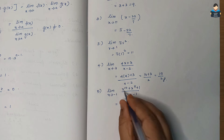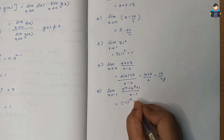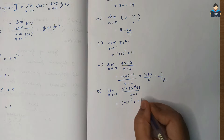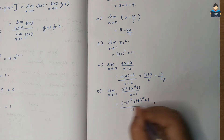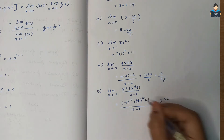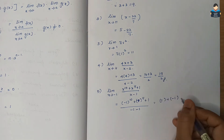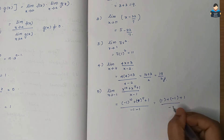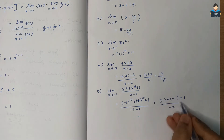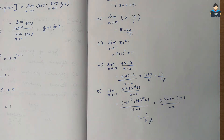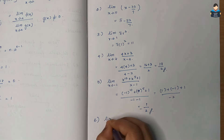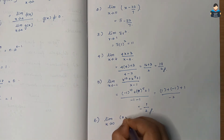Substituting x = -1: numerator gives (-1)^10 + (-1)^5 + 1. Since power 10 is even, (-1)^10 = 1; power 5 is odd, (-1)^5 = -1; plus 1. So numerator = 1 - 1 + 1 = 1. Denominator is -1 - 1 = -2. Answer is 1 divided by -2, which is -1/2.